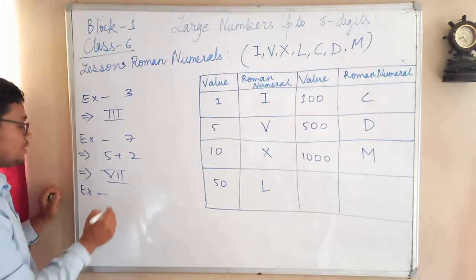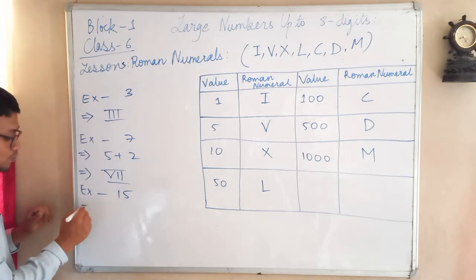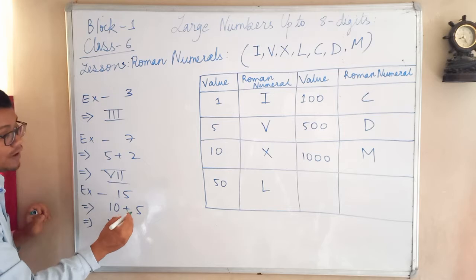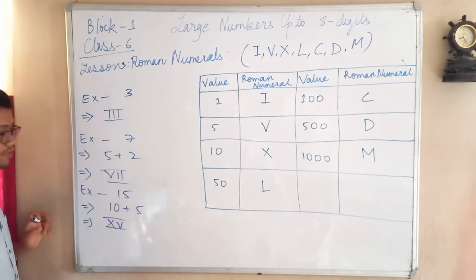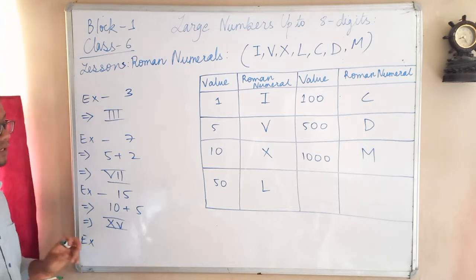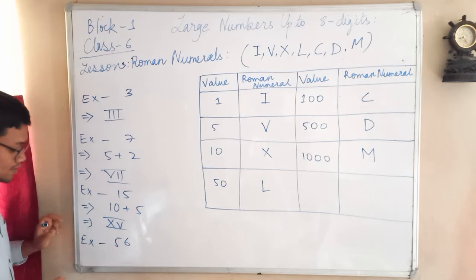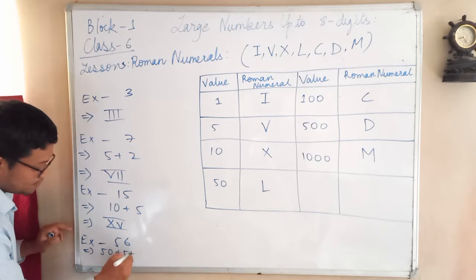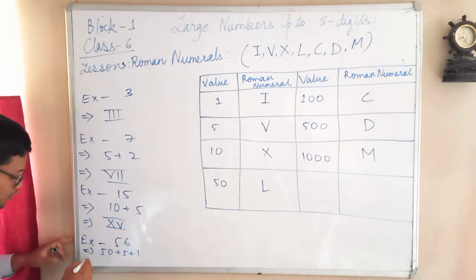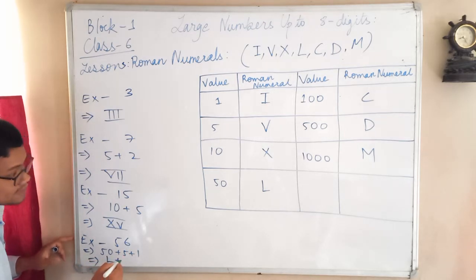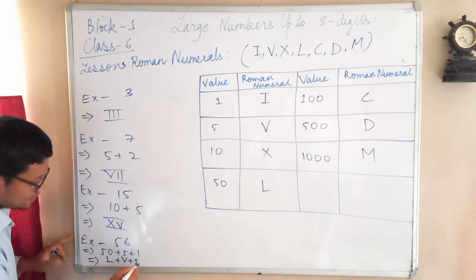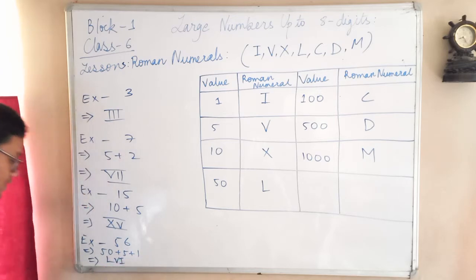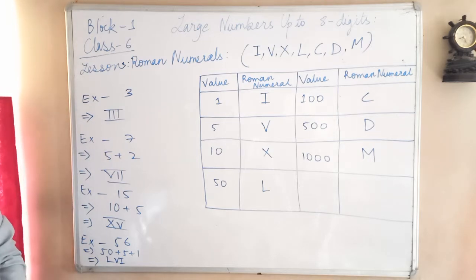Example three: if you want to write fifteen — fifteen is ten plus five. Ten is X and five is V, so fifteen is written as XV. Another example: how will you write fifty-six? Fifty-six is fifty plus five plus one. Fifty is L, five is V, one is I, so altogether fifty-six is written as LVI.